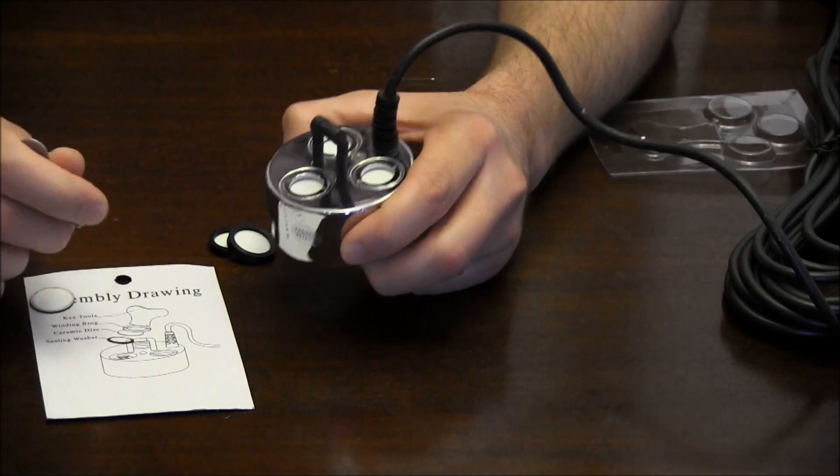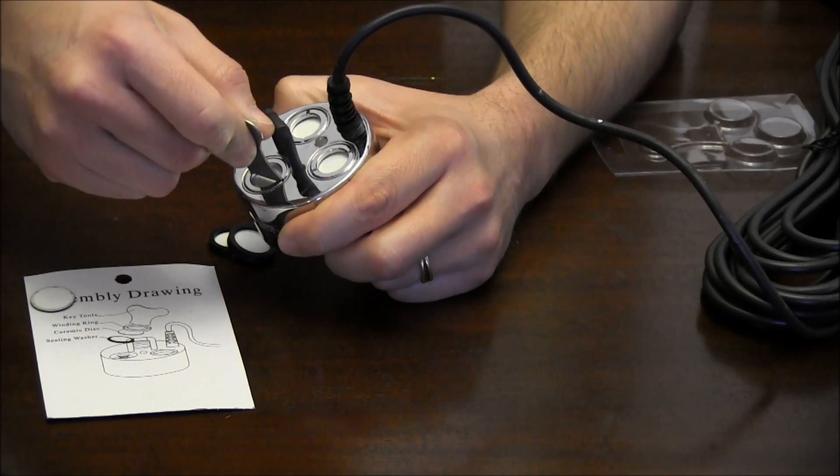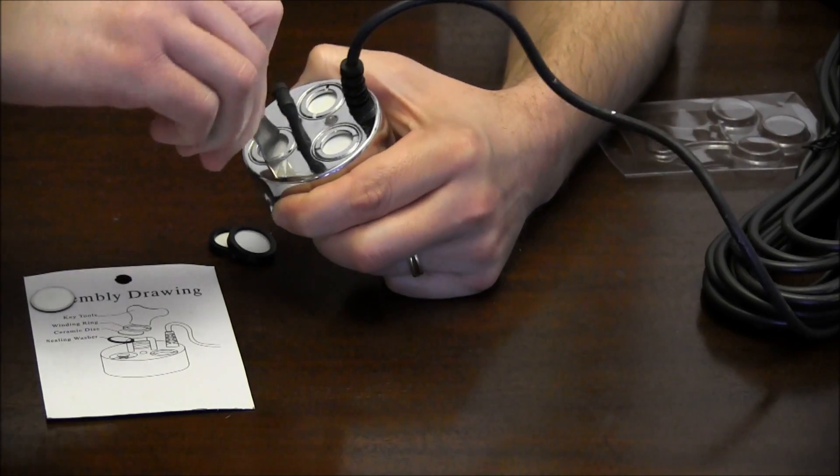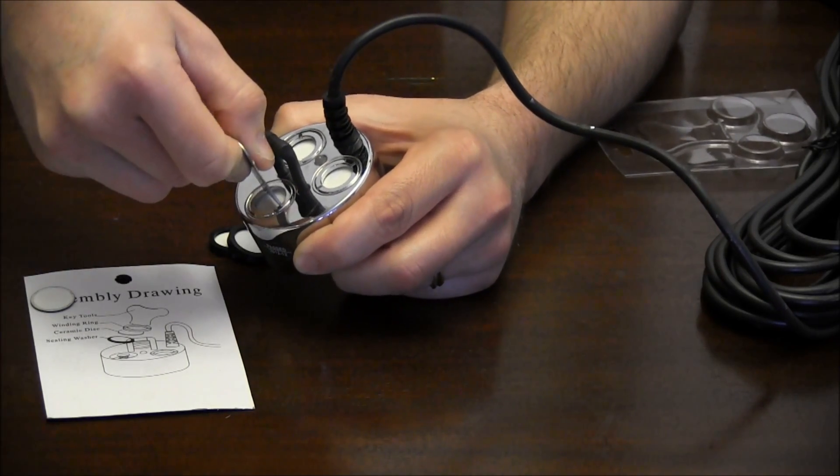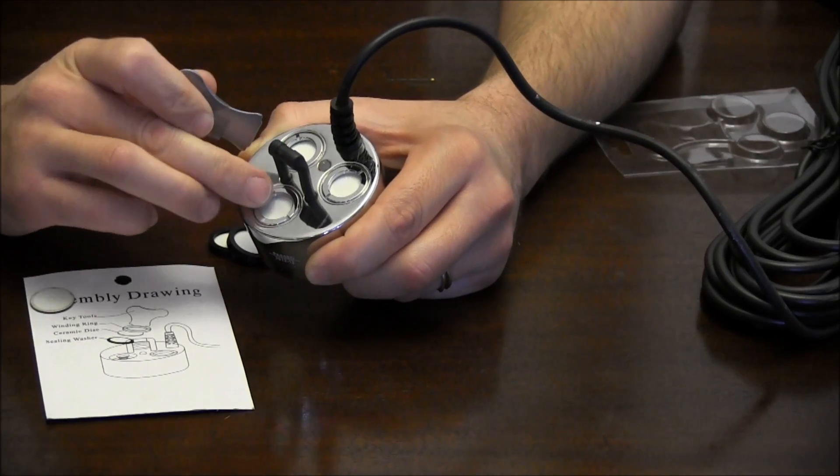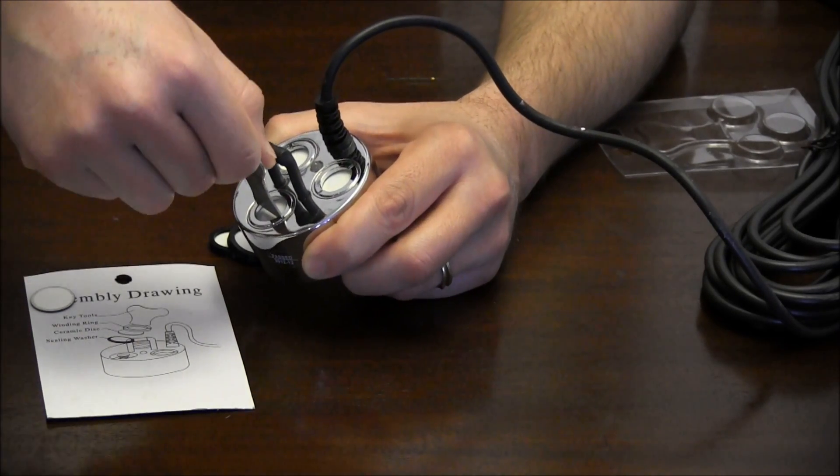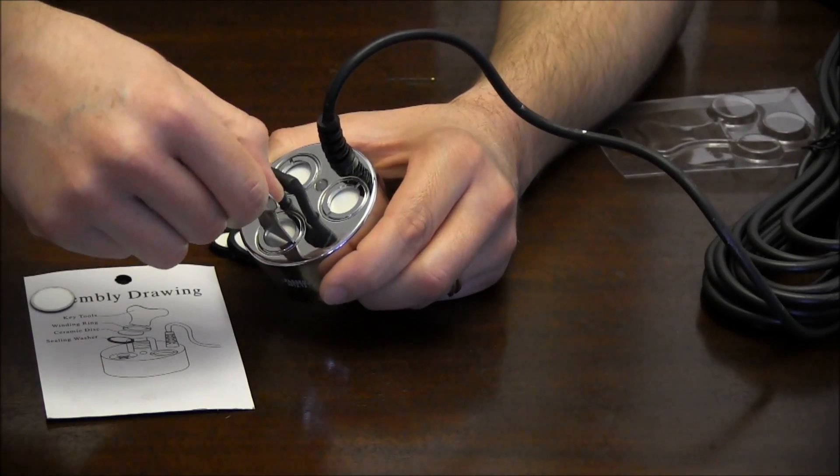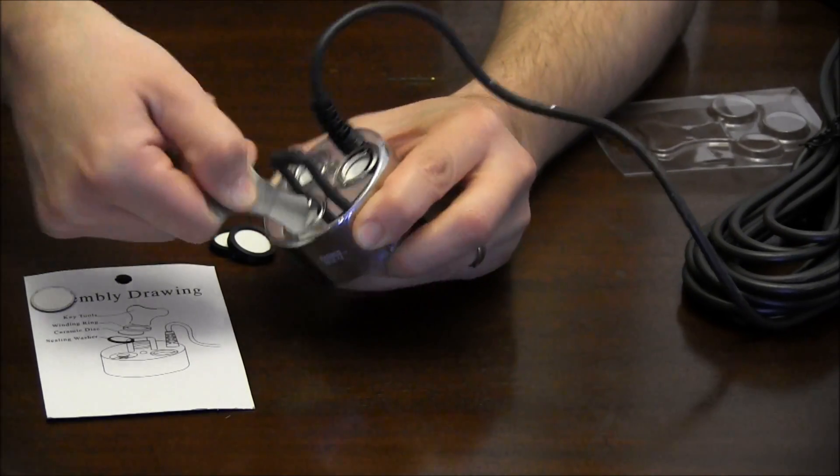Take your key that you get with the kit and it fits right into this silver ring that holds your disc down. Now whenever you first do this, the first thing you want to do, even before you put it in the water, if you get a brand new unit, you want to make sure these are tight. These tighten all the way.